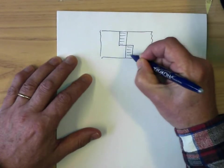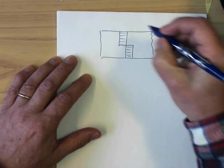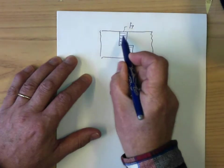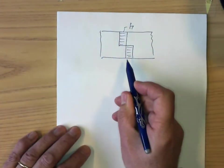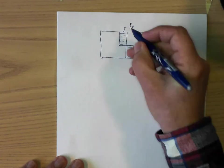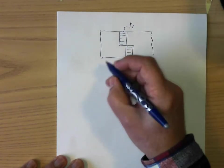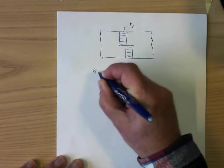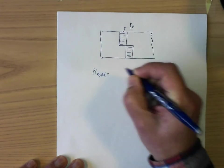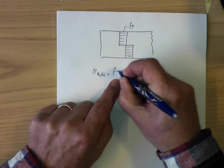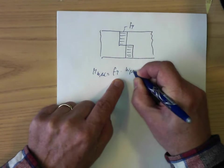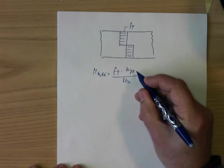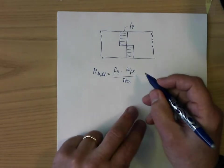If we calculate the moment resistance of this beam, then all stress vectors here have the length of the yield strength. To calculate the moment resistance, MbRd, which is Fy times W-plastic divided by gamma M0. And then we have to calculate W-plastic, the plastic section modulus.